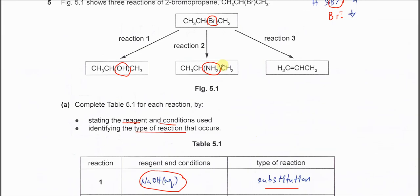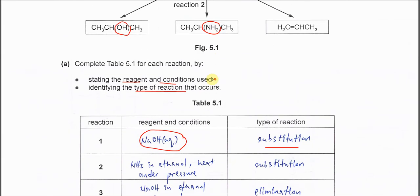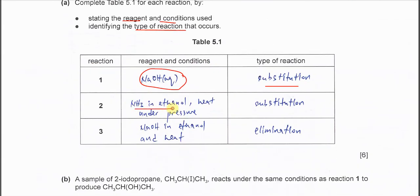For the second reaction, we know that we must use ammonia. Ammonia in ethanol and must heat under pressure. This is quite special for this reaction - heat under pressure. Type of reaction is substitution.